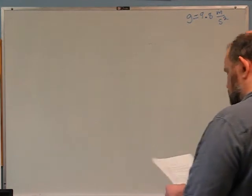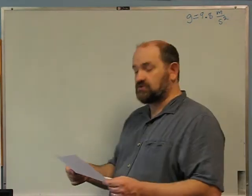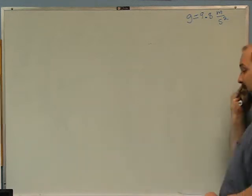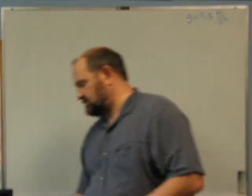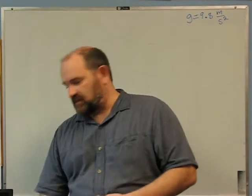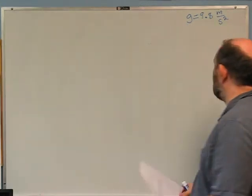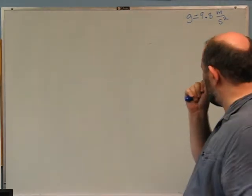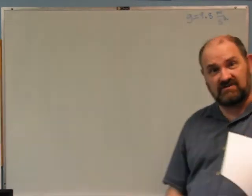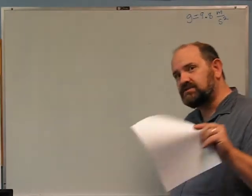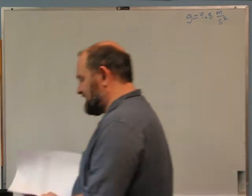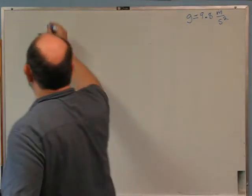Problem three. The acceleration due to gravity at the surface of the Earth, usually represented by the variable g, is 9.8 meters per second squared. We will be using this a fair amount in just a week or two. Some of you will think, shouldn't g be minus 9.8 meters per second squared? The answer is no, for reasons I will discuss in class when we get to it. First question: what is g in feet per second squared?